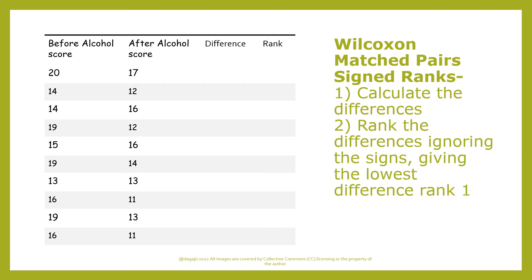Here's our raw data of reaction scores before alcohol and after alcohol, because it was a repeated measures design. The first piece of calculation is to calculate the differences between the two conditions. So 20 take away 17 is 3, 14 take away 12 is 2, 14 take away 16 is minus 2, and so on.